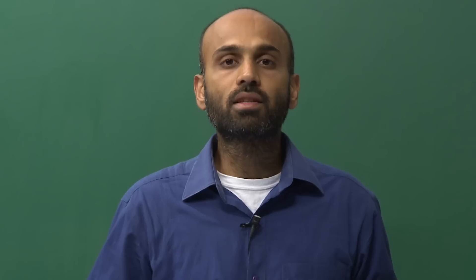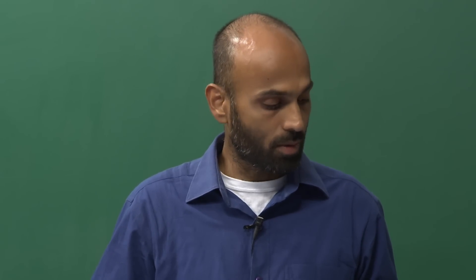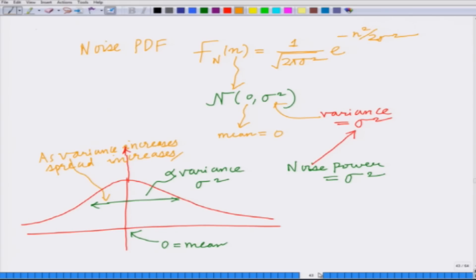We are also considering BPSK modulated symbols, where information symbol 0 is mapped to voltage level plus square root of p, and information symbol 1 is mapped to voltage level minus square root of p.